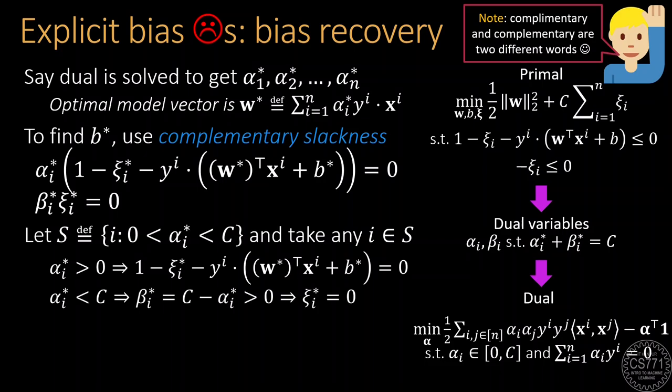Similarly, since alpha*_i is strictly less than C, beta*_i would become non-zero. Using complementary slackness now tells us that the slack term xi*_i must be equal to 0. Combining these two results allows us to calculate the value of b* very easily.